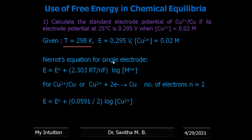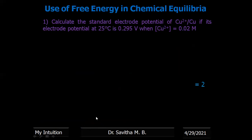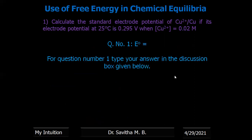Since T = 298 K, the equation reduces to: E = E° + (0.0591 / 2) × log[Cu²⁺]. E(Cu) is already given as 0.295 V and the concentration is 0.02 molar. Substituting: 0.295 = E° + (0.0591 / 2) × log(0.02). The calculation is left for you — please give the answer for E° in the comment box.